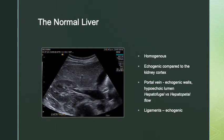When we talk about hepatofugal and hepatopetal flow, this is specific to the liver — you cannot use these terms for any other organ. To remember which is which: hepatopetal — think of a pedal, you're pedaling towards the liver, so hepatopetal flow is towards the liver. And hepatofugal is away — fugitives leave.